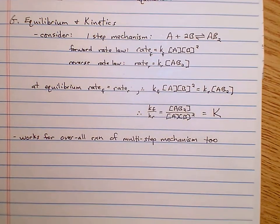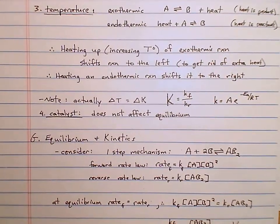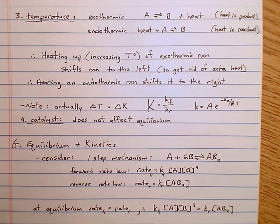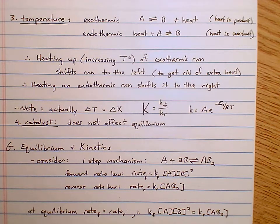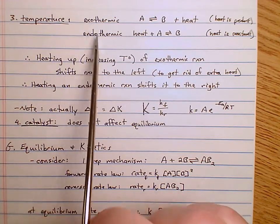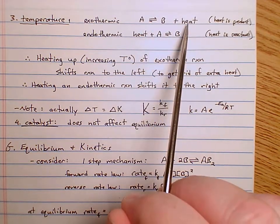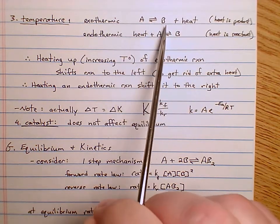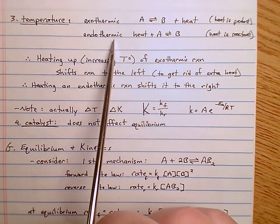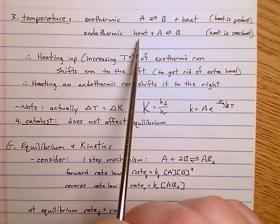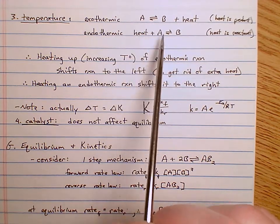Another thing we can do is temperature. For an exothermic reaction, heat is given off — heat can be seen as a product: A ⇌ B + heat. For an endothermic reaction, you have to add heat — heat is a reactant: heat + A ⇌ B. Using Le Chatelier's principle, if you increase the temperature of an exothermic reaction by adding heat, heat is a product, so the equilibrium shifts to the left.